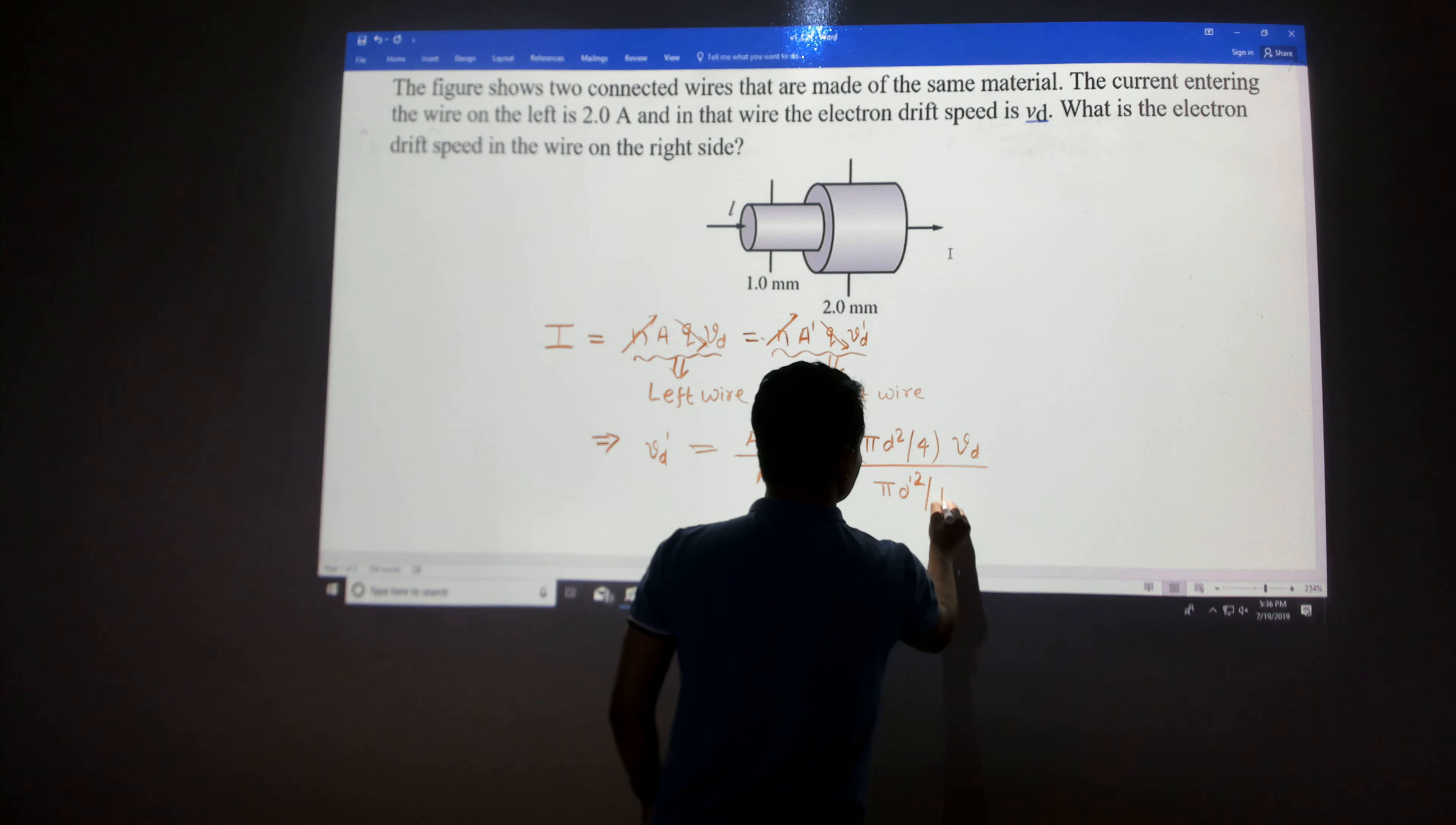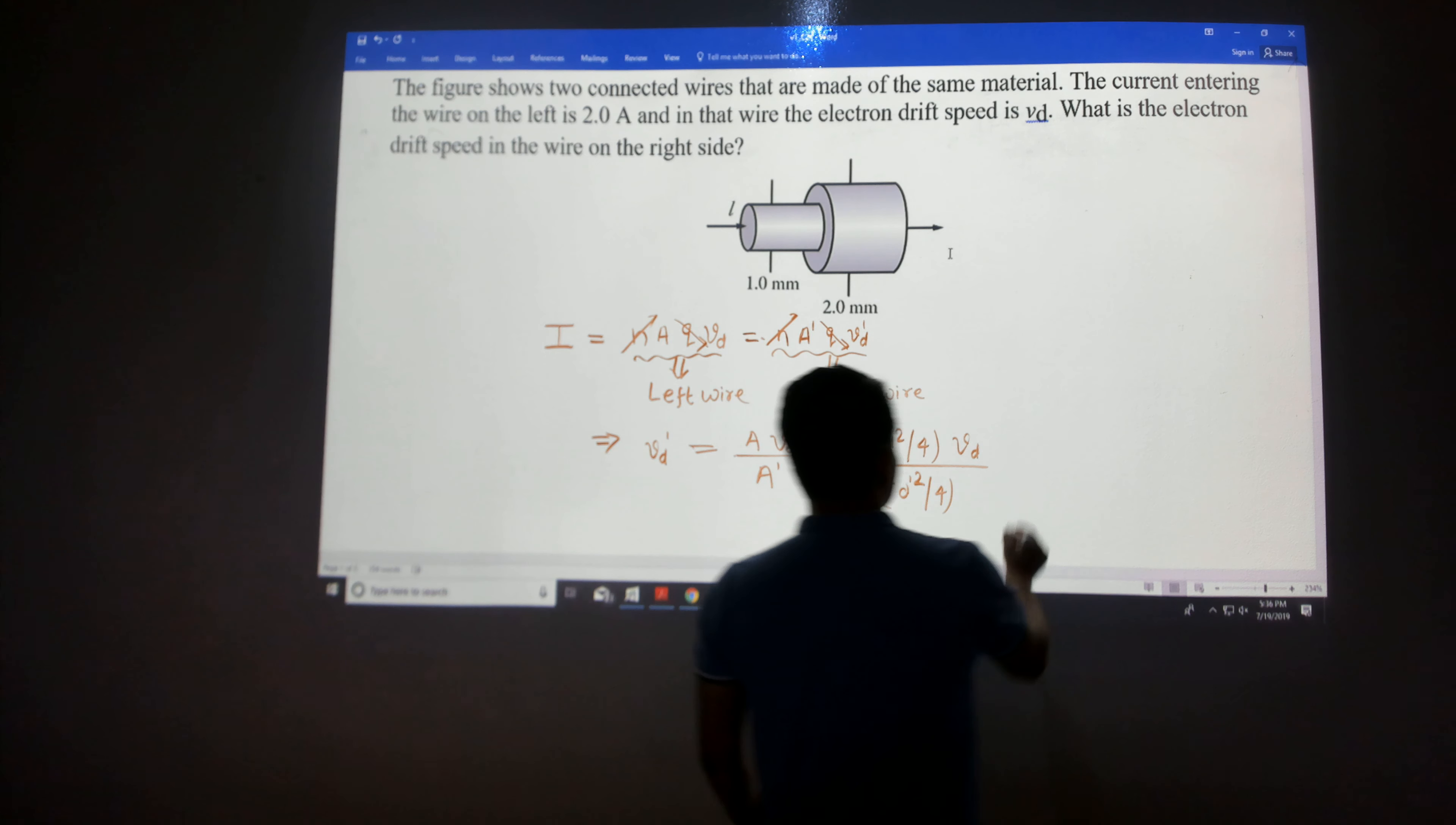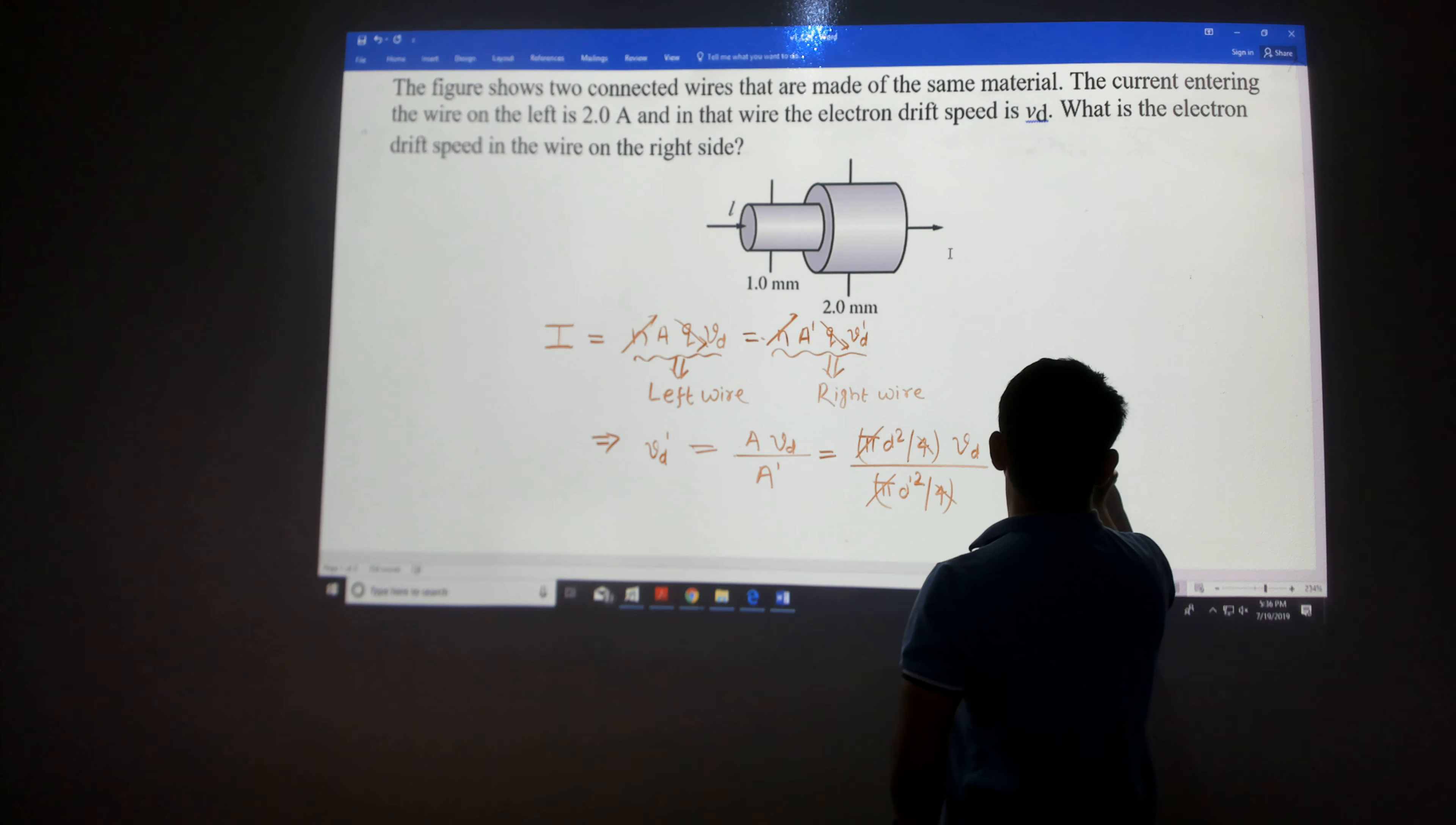The diameter of this wire is 2 mm and this is 1 mm. The π cancels out, the 4 cancels out. The diameter is 1 mm, so I'm using 1² and this is 2².